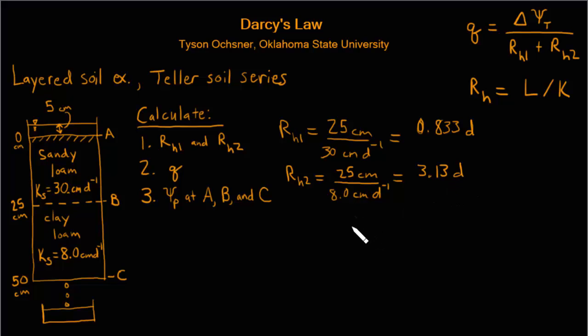Now we're ready to calculate the flux. To do that we'll need to know what is the total difference in the total potential across the layers. And to do that we'll use a table where we solve for the gravitational potentials and the pressure potentials and the total potentials. And we'll eventually want to know those for our points A, B and C.